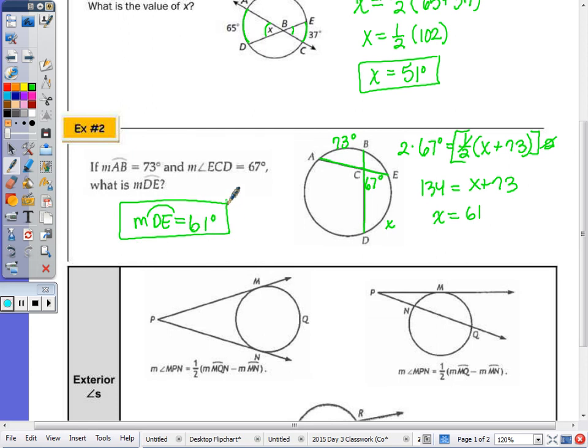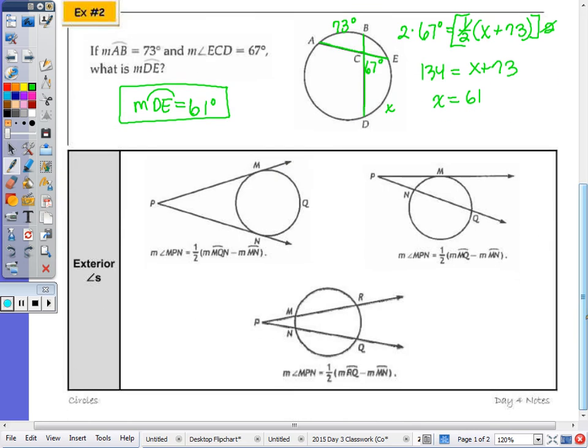Now on to an exterior angle. I have three different visuals. If I'm looking at the exterior angle MPN, this angle here, if I extend along, that intercepts these two arcs which make up the full circle.